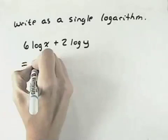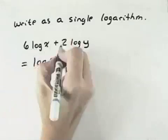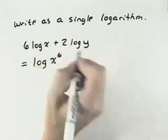So for example here, the 6 out in front of this log, well, it's the log of x, so because of the 6 in front, we can pull that up and make it x to the 6th power.